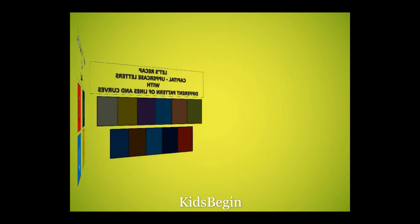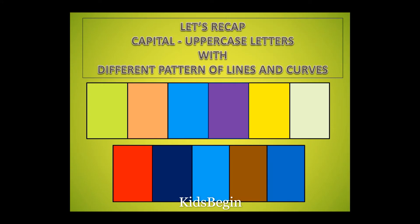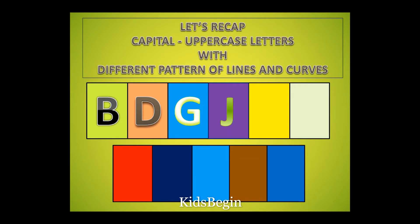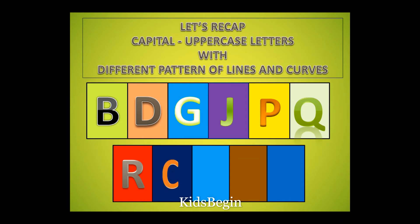Now let us recap the capital uppercase letters with different patterns of lines and curves once again: B, D, G, J, P, Q, R, C, O, S, U.